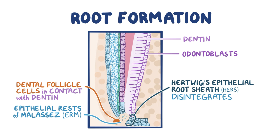The periodontal ligament, which connects the tooth to the alveolar bone, is formed by fibroblasts differentiating from the dental follicle cells. In addition, the dental follicle gives rise to osteoblasts that form the alveolar bone where the fibers of the periodontal ligament are embedded. These fibers that insert into the cementum and the alveolar bone — providing tooth anchorage — are known as Sharpey's fibers.